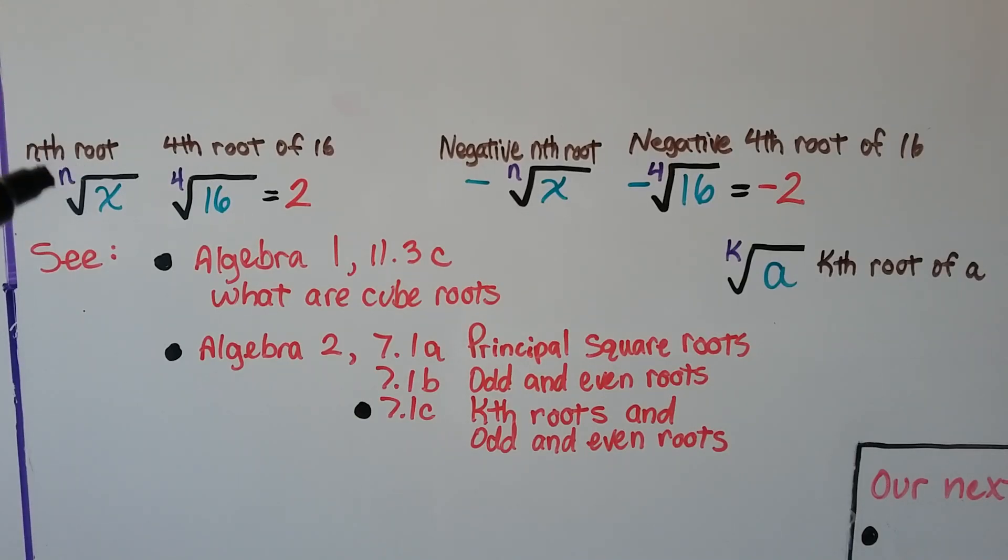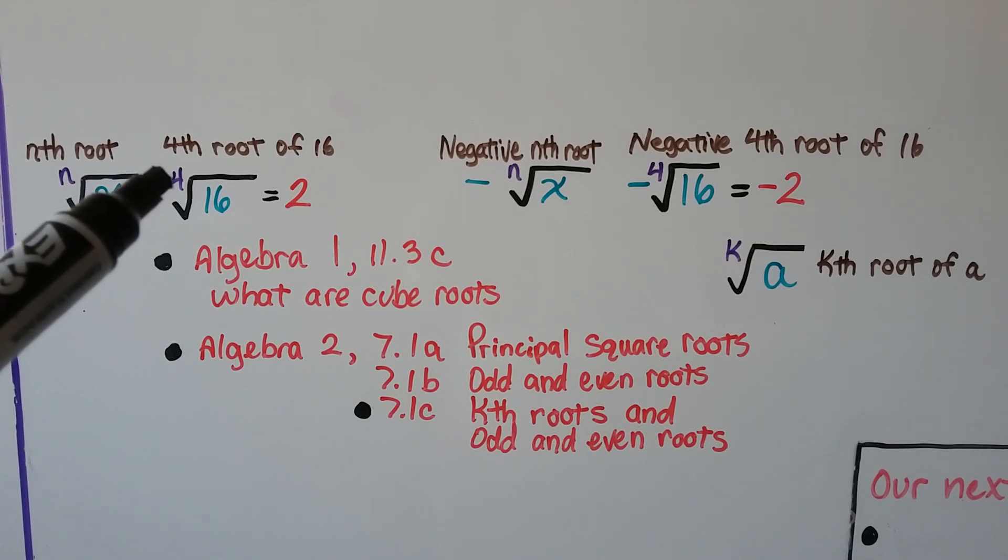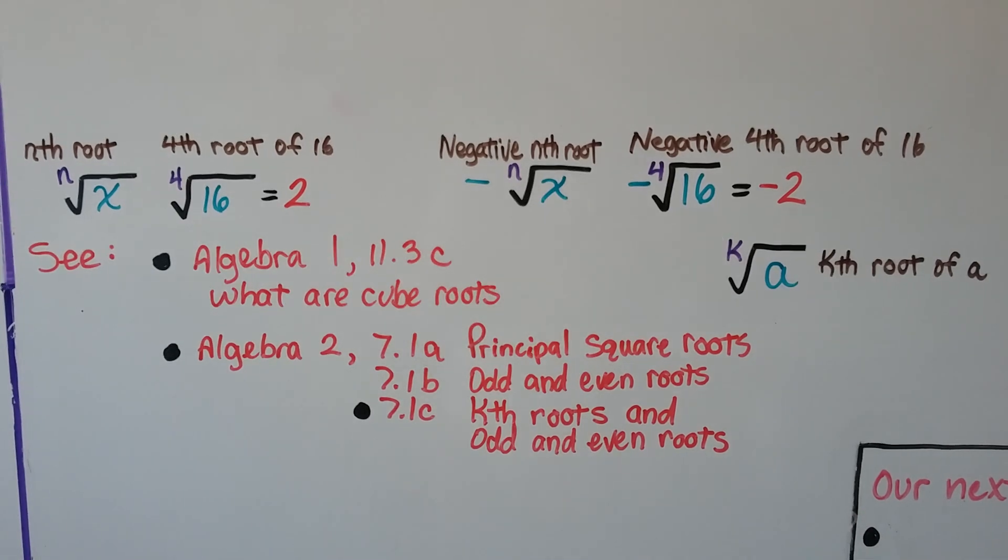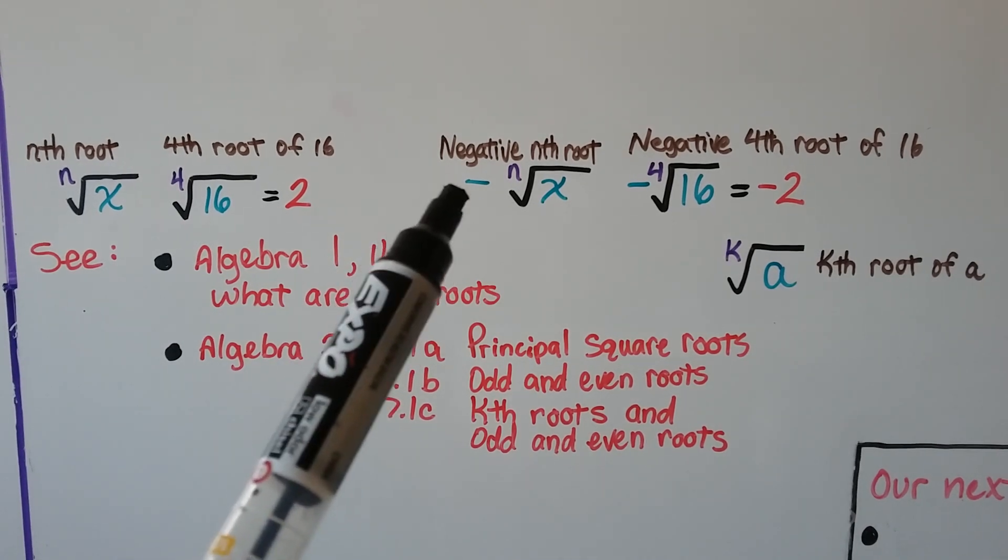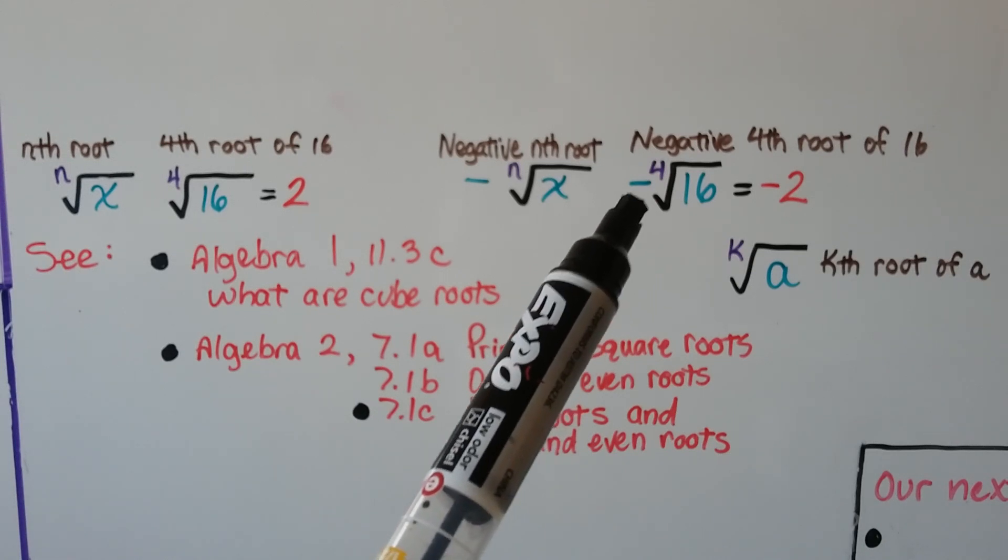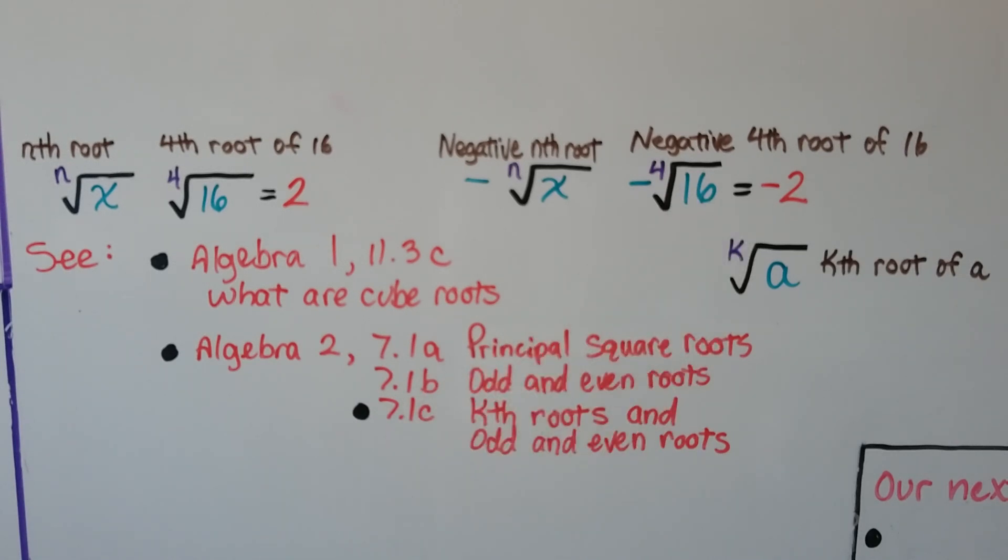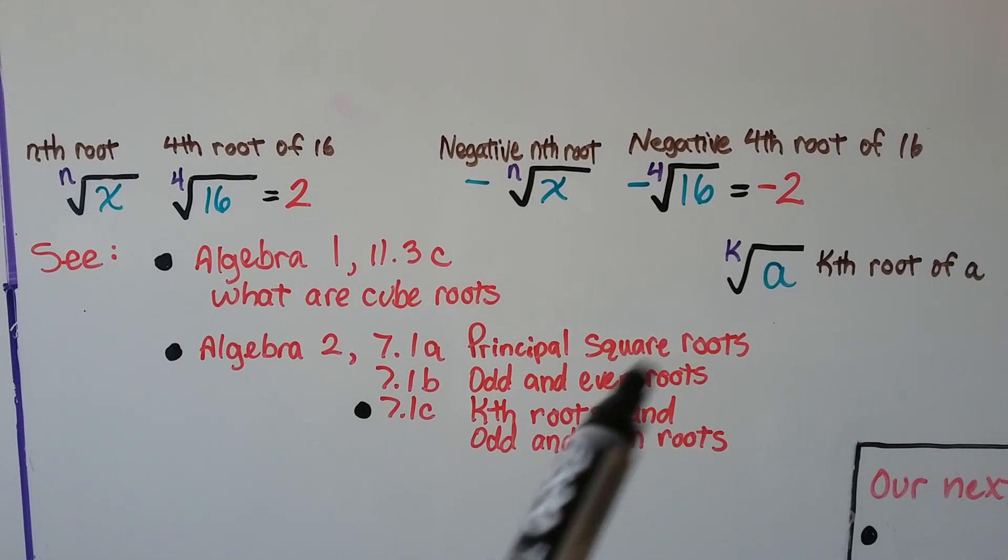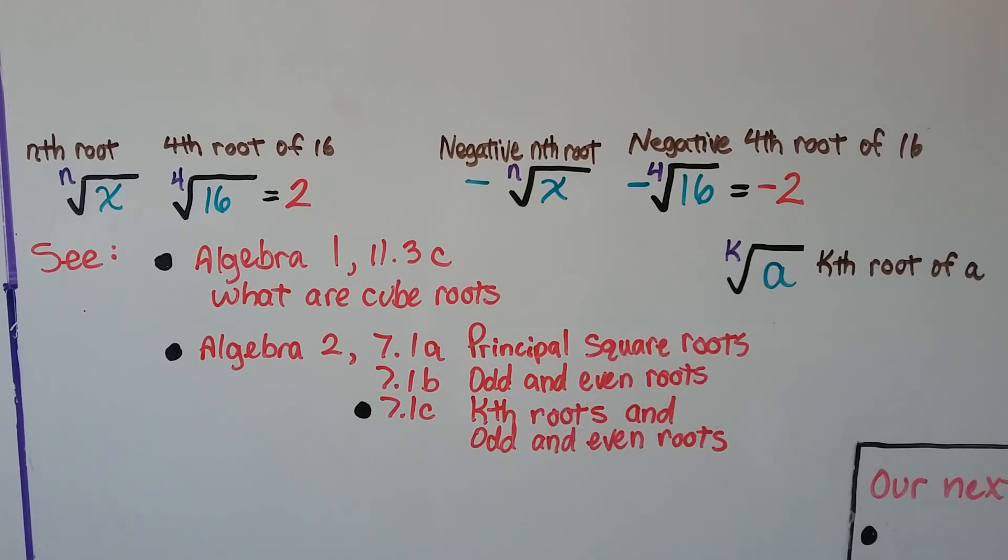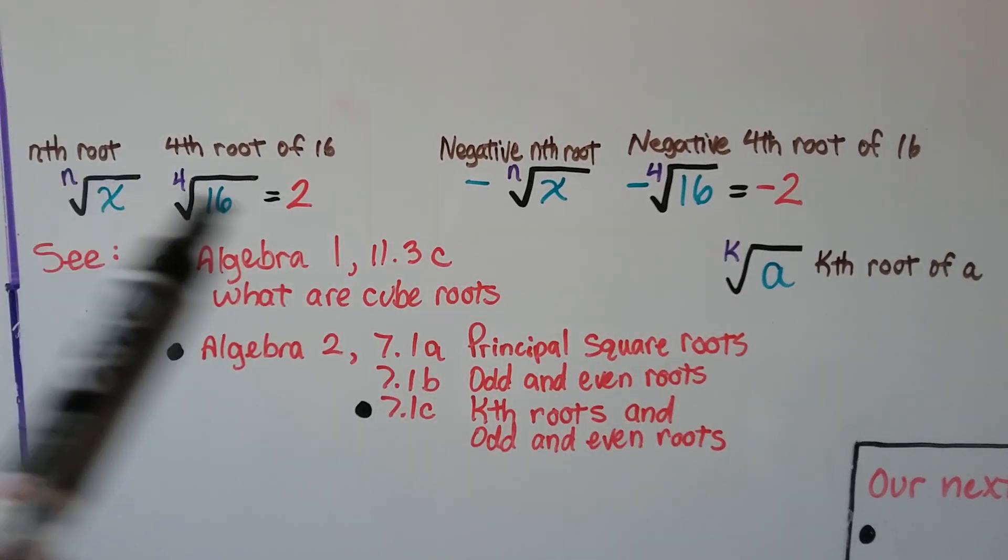This would be the nth root of x. This is the fourth root of 16, that would be 2. The negative nth root of x, the negative fourth root of 16, would be a negative 2. You might also see it written as the kth root of a, or the kth root of x. So there might be a little k there instead of an n.